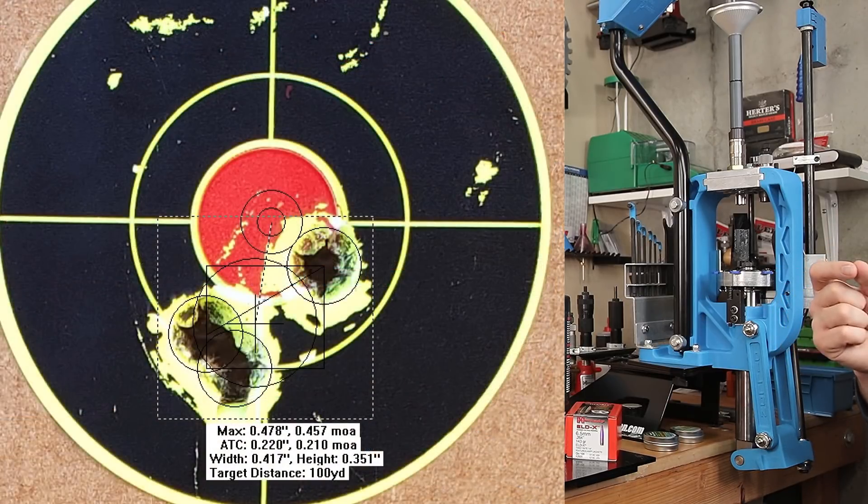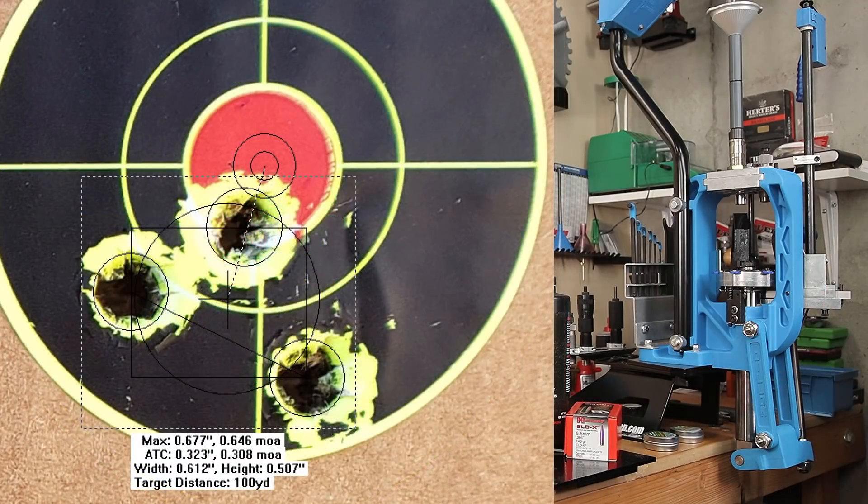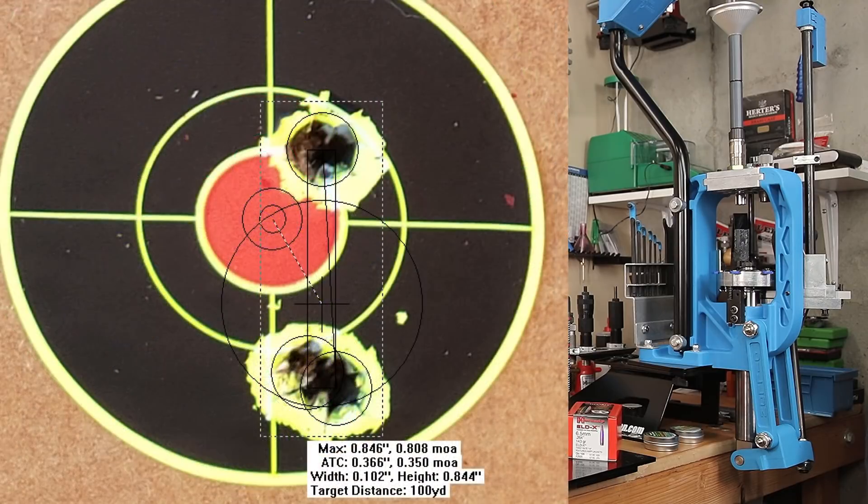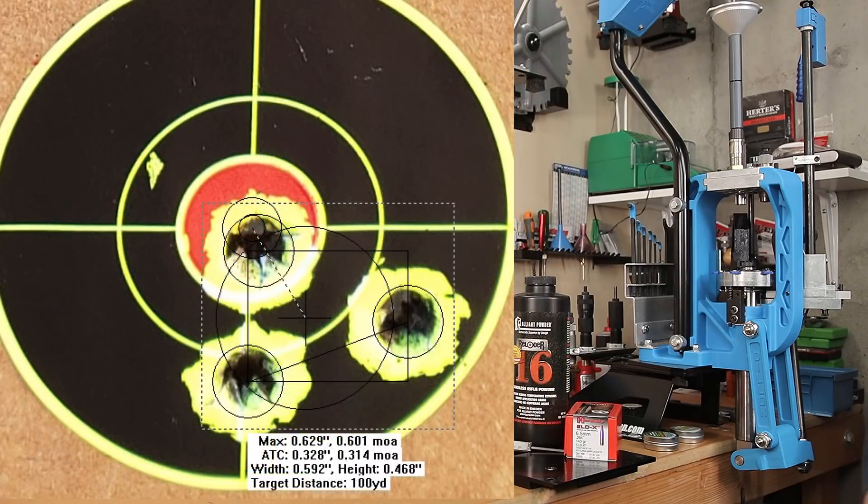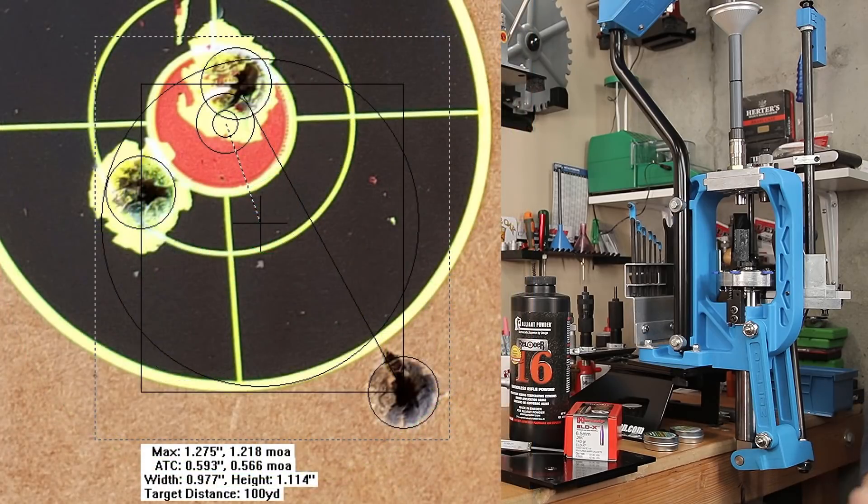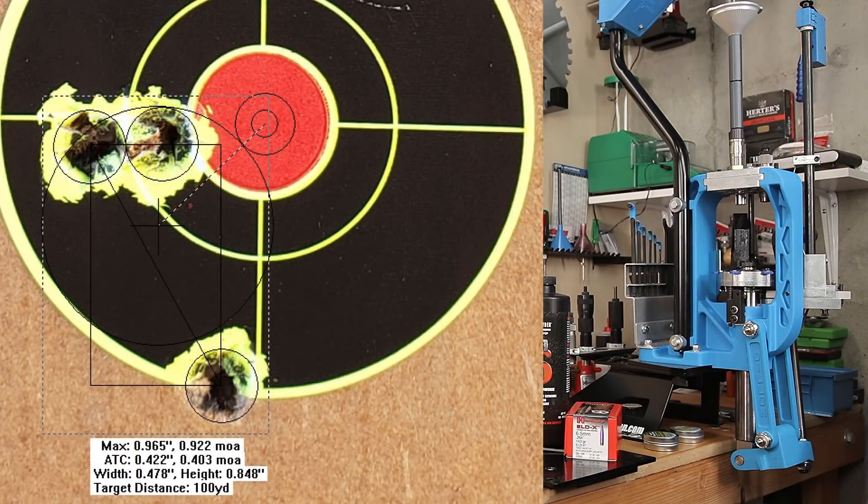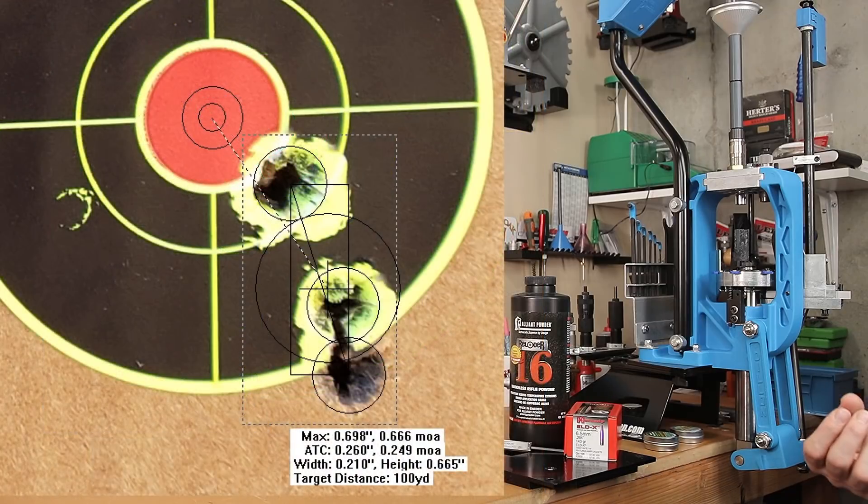At 2.228 inches, we dropped back down to 0.457 MOA. At a CBTO of 2.225 inches, we went up to 0.646 MOA. At 2.222, we went to 0.808 MOA. At 2.219, we went 0.601 MOA. At 2.216, 0.957 MOA. At 2.213, we went to 1.218 MOA. At 2.21, we dropped back down slightly to 0.922 MOA. At 2.207, we dropped down to 0.666.